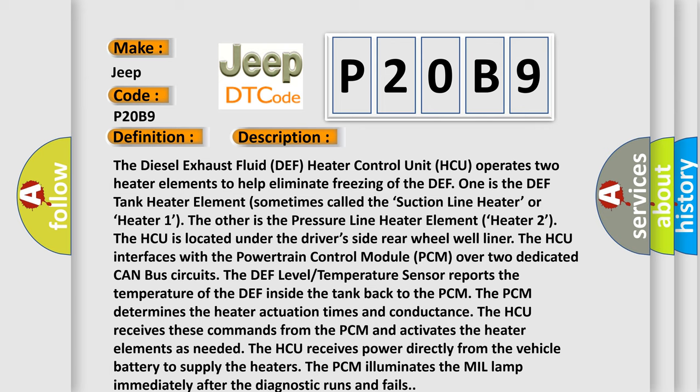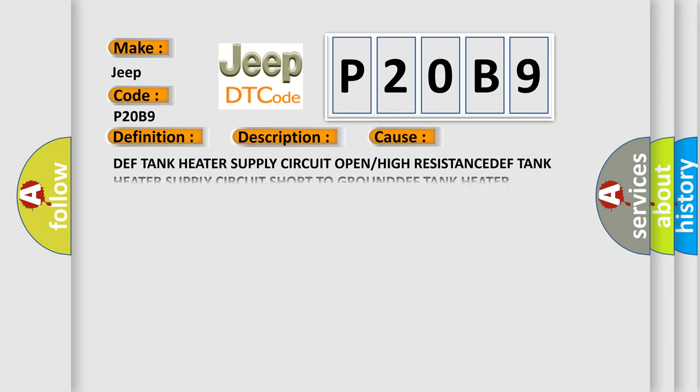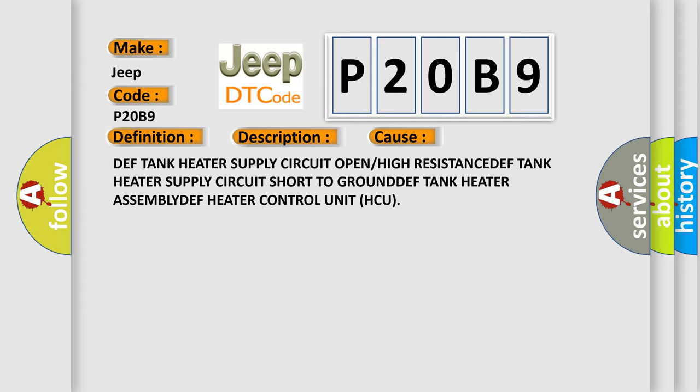The PCM determines the heater actuation times and conductance. The HCU receives these commands from the PCM and activates the heater elements as needed. The HCU receives power directly from the vehicle battery to supply the heat, and the PCM illuminates the MIL lamp immediately after the diagnostic runs and fails. This diagnostic error occurs most often in these cases: DEF tank heater supply circuit open or high resistance, DEF tank heater supply circuit short to ground, DEF tank heater assembly, or DEF heater control unit (HCU).